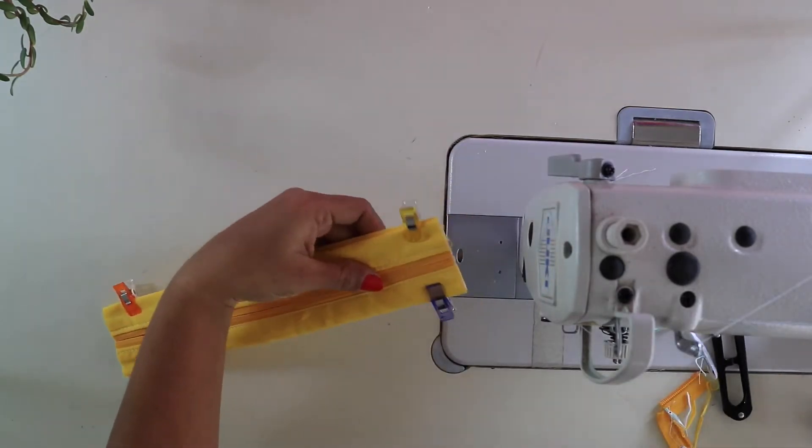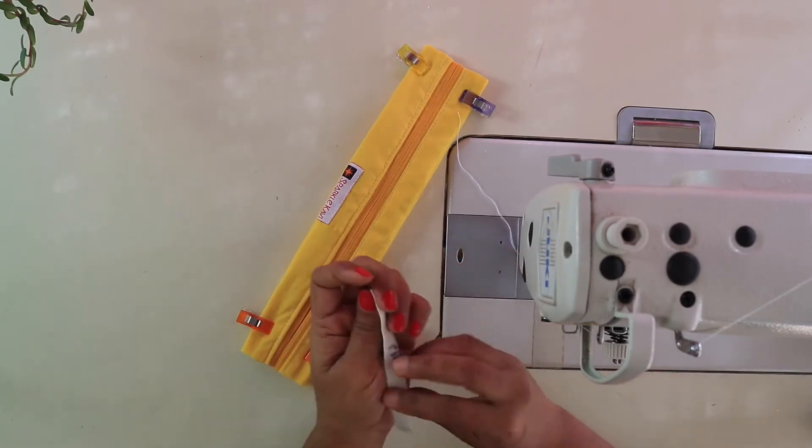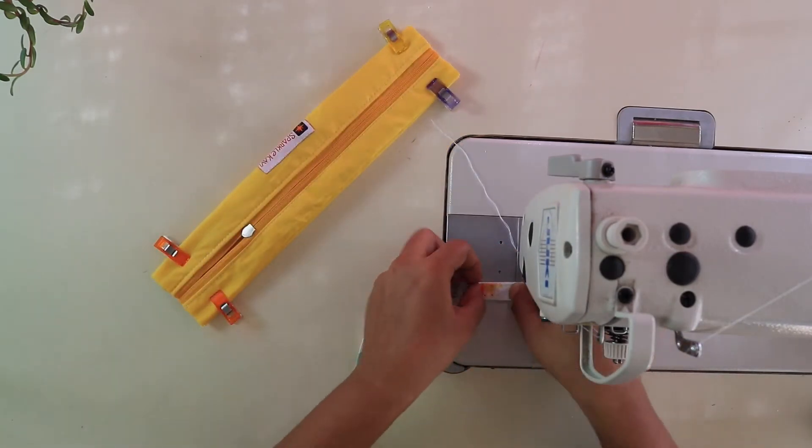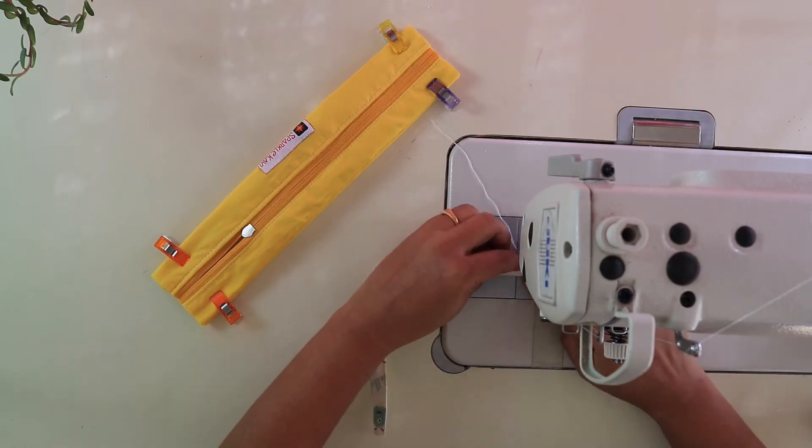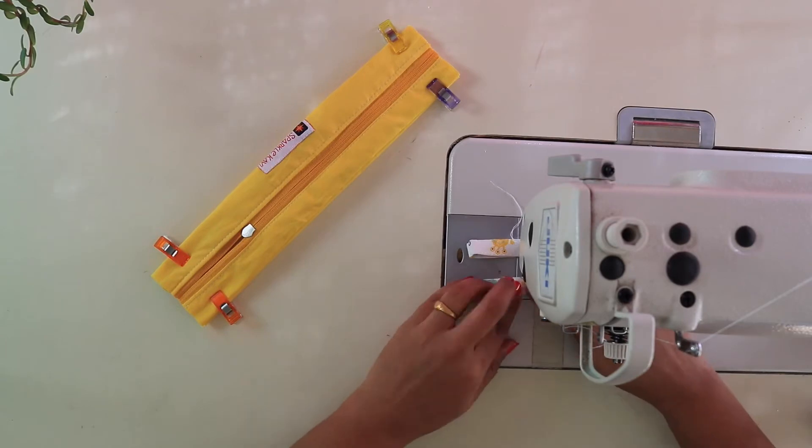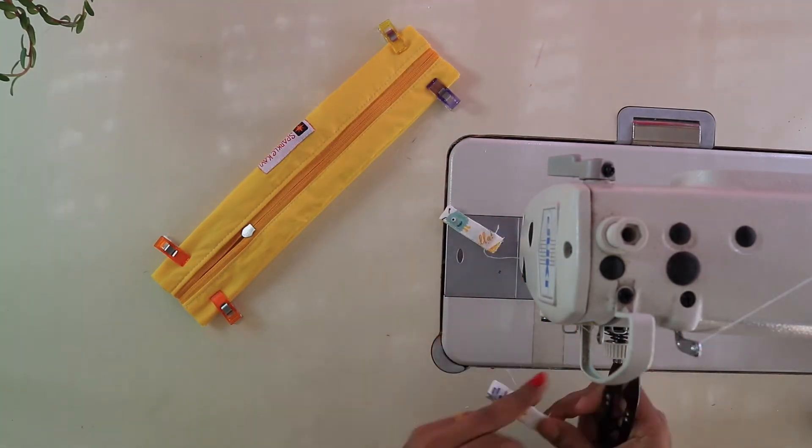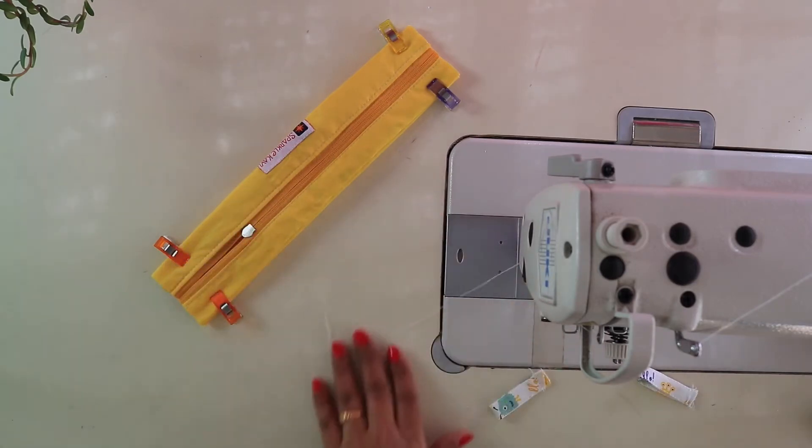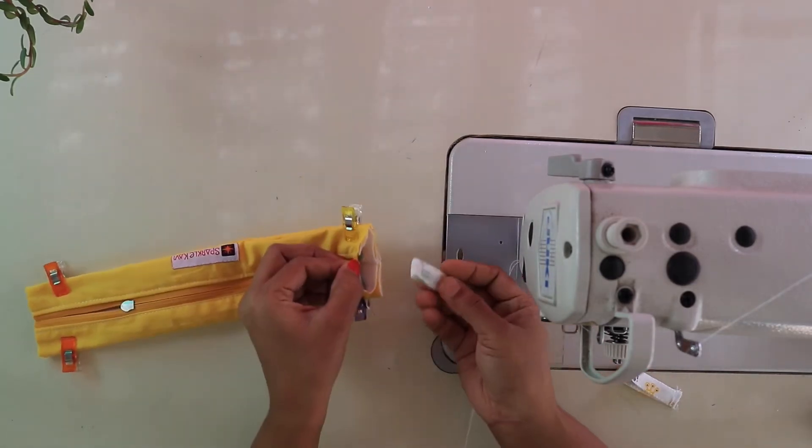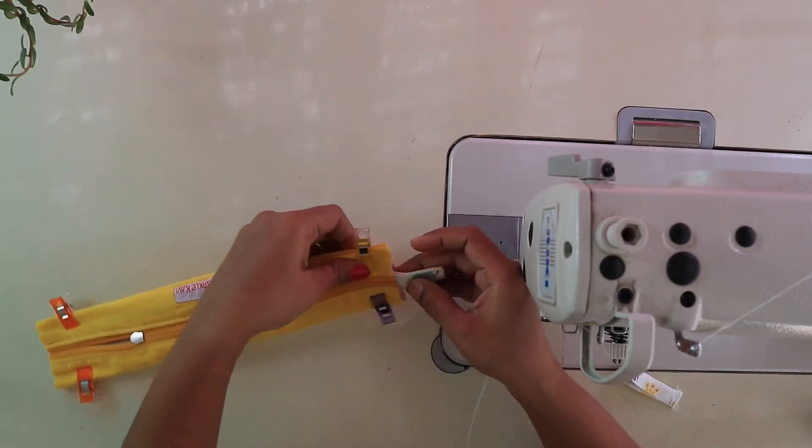Trim the extra zipper from both the sides. Next, take the side tabs, fold them in half and make a stitch at open ends to hold them in place. Now, insert the tabs with folded side inside right next to zipper in center.